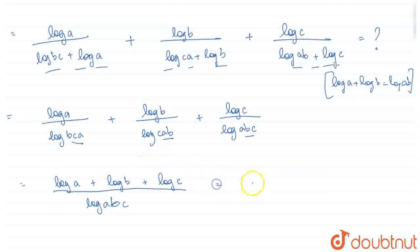Now see, again our addition property is applying here. So we can write this as log abc upon log abc, so our answer is one.